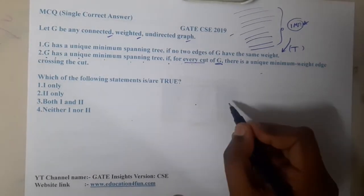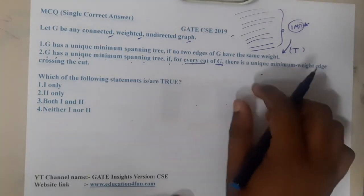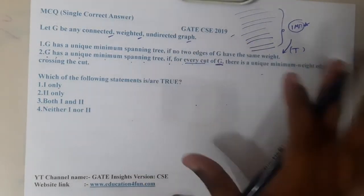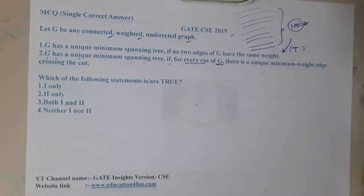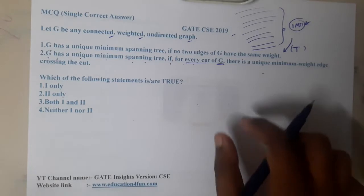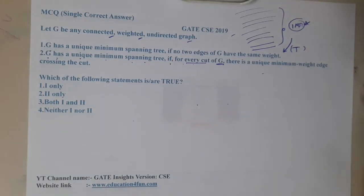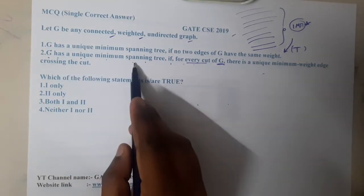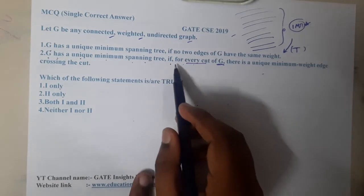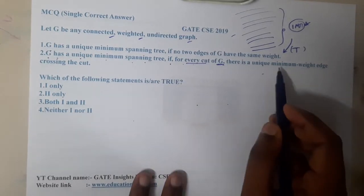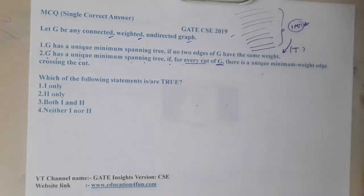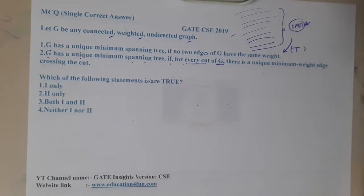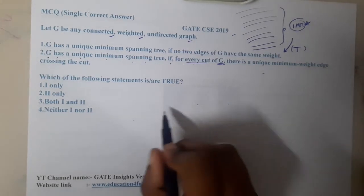A cut edge is basically an edge whose removal disconnects the graph — those are called cut vertices. So if you remove a particular edge and it becomes disconnected, that is a cut edge. The statement says G has a unique minimum spanning tree if every cut of G has a unique minimum weight edge crossing the cut. This option is not that clear.